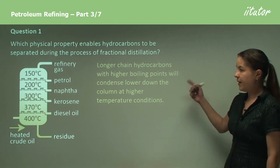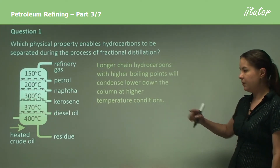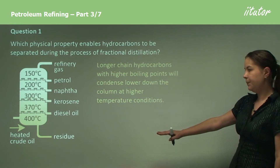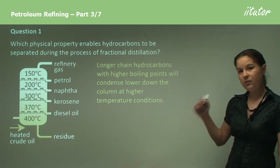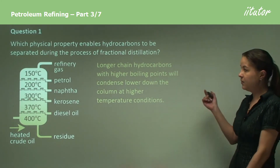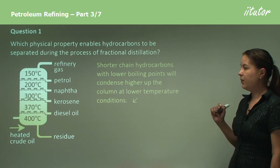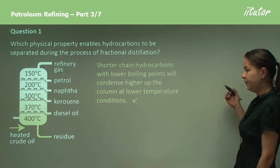To recap: longer chains have a higher boiling point and condense lower down the column. And of course, shorter chains have lower boiling points and will condense higher up the column.